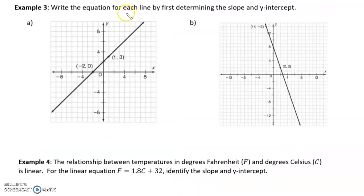Example 3. Write the equation for each line by first determining the slope and y-intercept. Okay, so I'm actually going to do the y-intercept first because we can just look at the graph and pick it out. So, this line intersects the y-axis at 2.